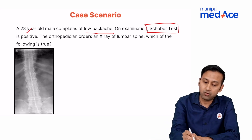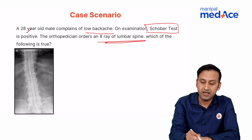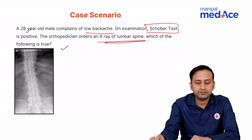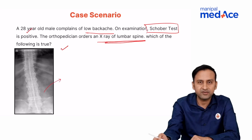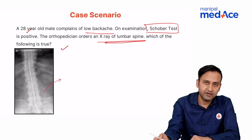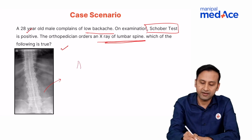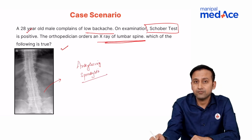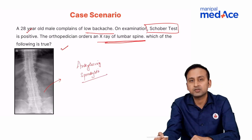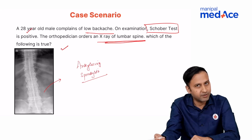The orthopedician orders an X-ray of the lumbar spine. Looking at this characteristic X-ray, most of you will say this is ankylosing spondylitis. In this session, we are going to learn what this disease is, how it behaves, and what various questions can be asked about it.